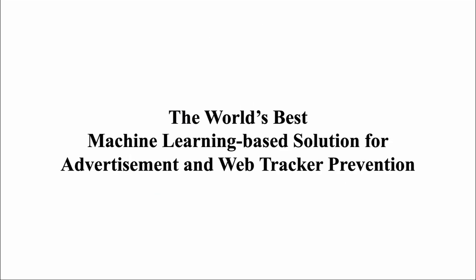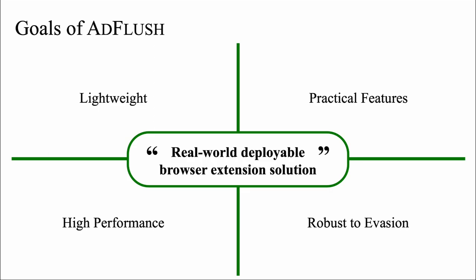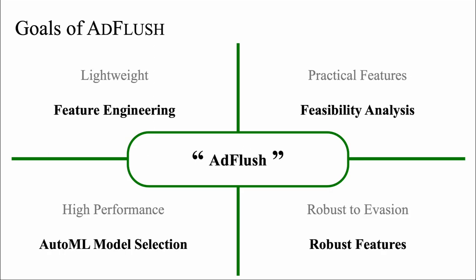We present AdFlush, the world's best machine learning-based solution for advertisement and web tracker prevention. AdFlush is a solution that is light and fast enough so it is suitable for real-time prevention, using practical features obtainable before ad and tracker contact, and achieves high performance and robustness to various evasion methods. We carefully designed our feature engineering and feasibility analysis process to reduce the overhead while using only features appropriate for real-time prevention.